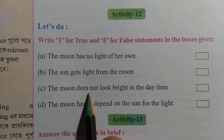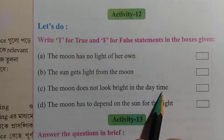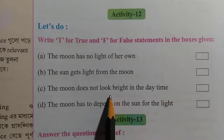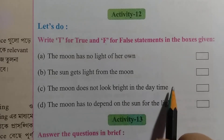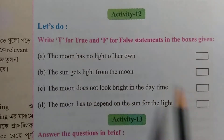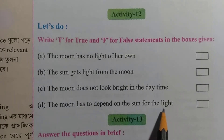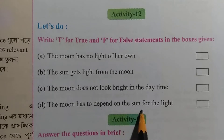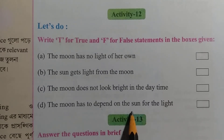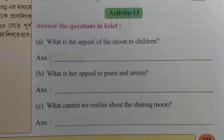The moon does not look bright in the daytime. The moon has to depend on the sun for its light. The moon is not a source of light in the sky.